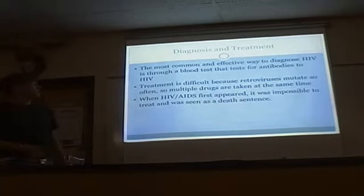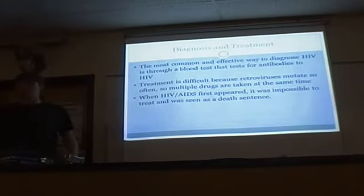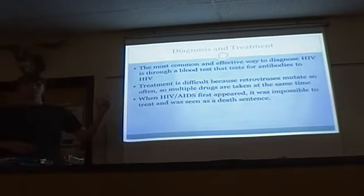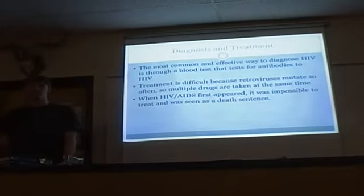For diagnosis, the best way to diagnose HIV is with a blood test — the ELISA test is what they use. Treatment is difficult because retroviruses mutate so often, so multiple drugs are taken at the same time, usually two or more. When HIV and AIDS first appeared, it was nearly impossible to treat because we had no idea what it was doing, why it was so hard to treat, or why other antiviral drugs weren't working on it.